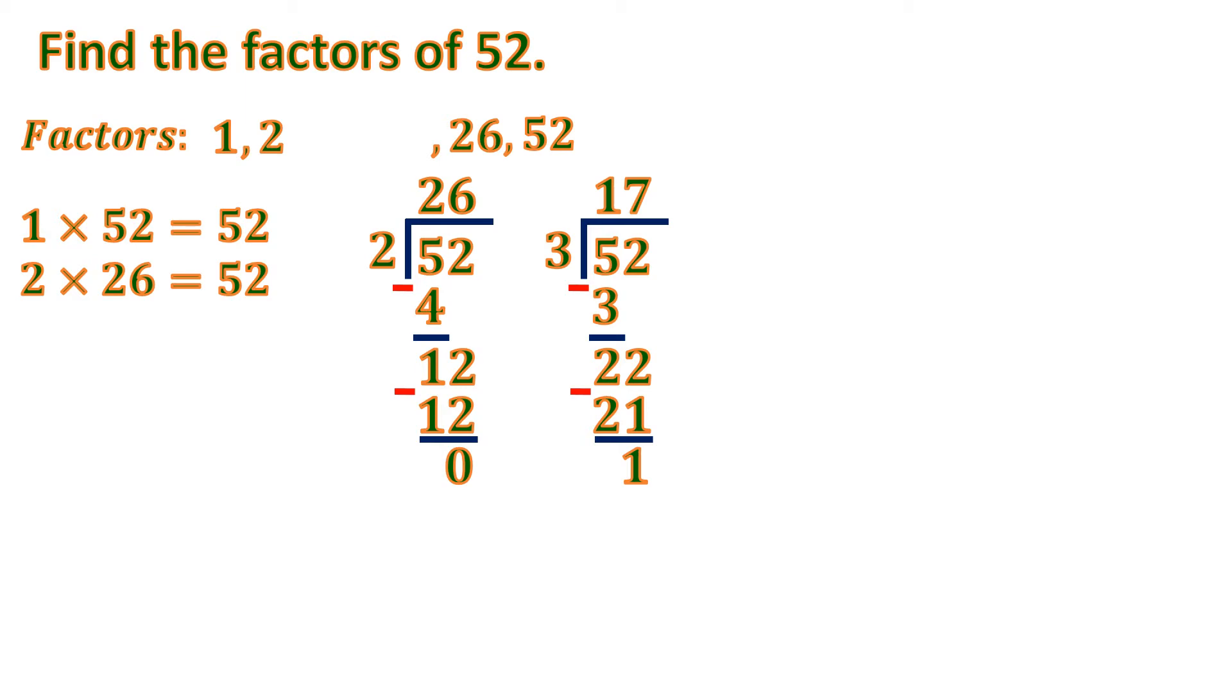So let's try 4. So 52 divided by 4. So we have 1. 1 times 4 is 4. 5 minus 4 is 1. And bring down 2. 12 divided by 4 is 3. So subtract. We have 0. So that means 4 times 13 is 52. So we have factors 4 and 13.